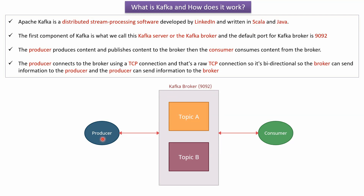Here you can see the producer, which produces the content and publishes it to the broker. Here you can see the consumer, which consumes the content from the broker. The producer connects to the broker using a TCP connection — a raw TCP connection — so it is bi-directional. The broker can send information to the producer and the producer can send information to the broker.